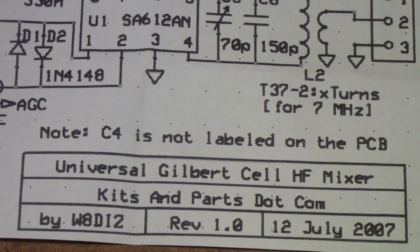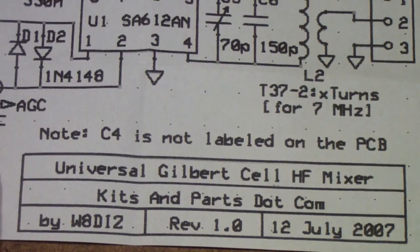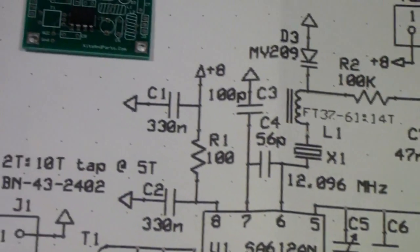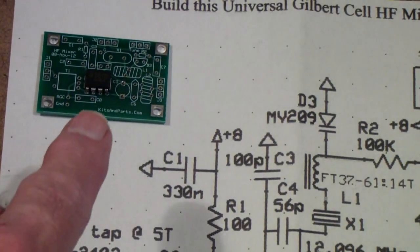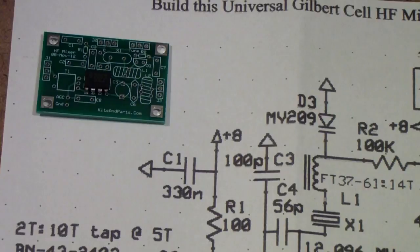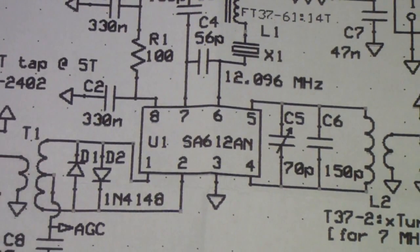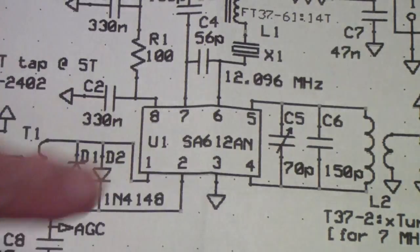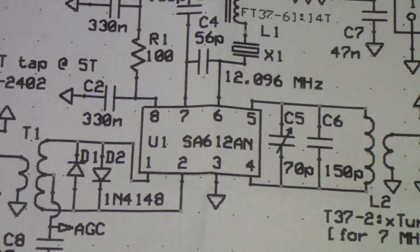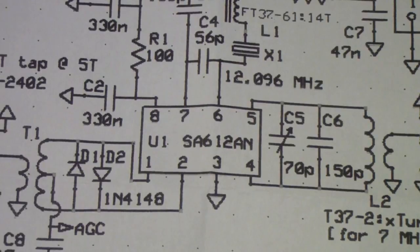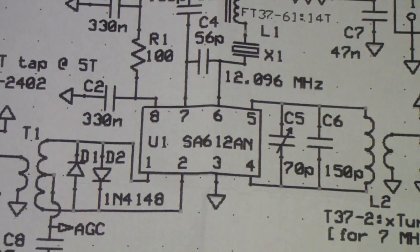I am building this Gilbert Cell HF mixer made by kitsandparts.com. This particular one uses an NE602 which is pre-mounted to the board. Now I bought this kit some time ago and since then they have upgraded the kit to use the SA612, which is actually an improved version of the 602. They're basically the same chip, basically a Gilbert Cell.